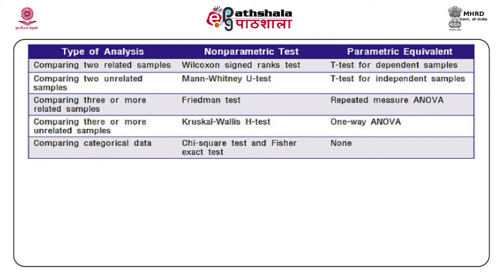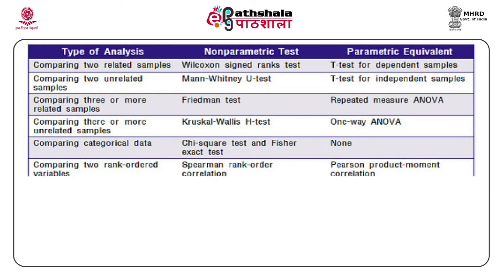Unfortunately, there is no parametric equivalent for categorical data comparison. When the type of analysis is comparing two rank-ordered variables, the non-parametric test is the Spearman rank order correlation, and the parametric equivalent is the Pearson product-moment correlation.